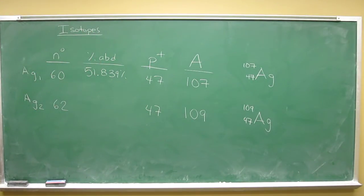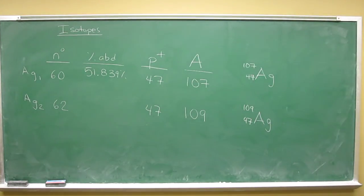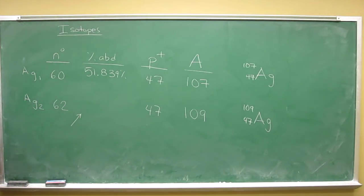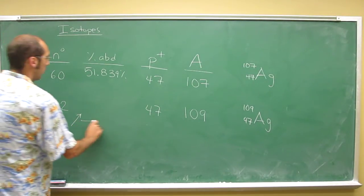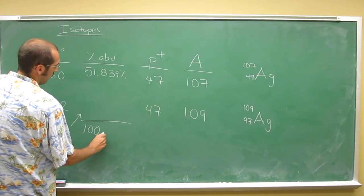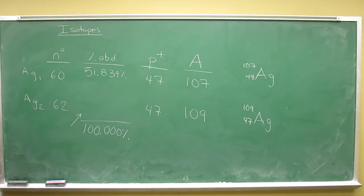And then it says, the second question I believe it said was what was the percent abundance of the other isotope, so this is what we're looking for. So we know that the total abundance is going to be 100.000 percent.